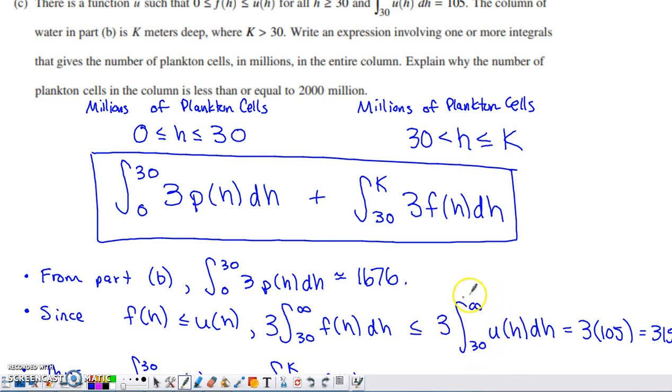I can actually figure out what the value of this expression is right here. I know that the definite integral from 30 to infinity of u of h with respect to h is 105. So if I multiply that by 3, what I end up with is I end up with 315.